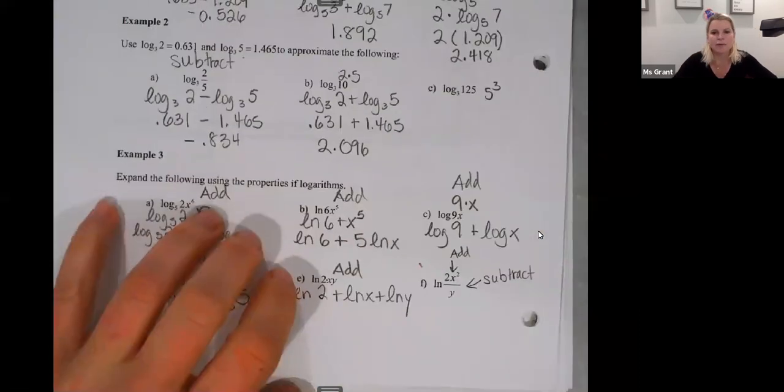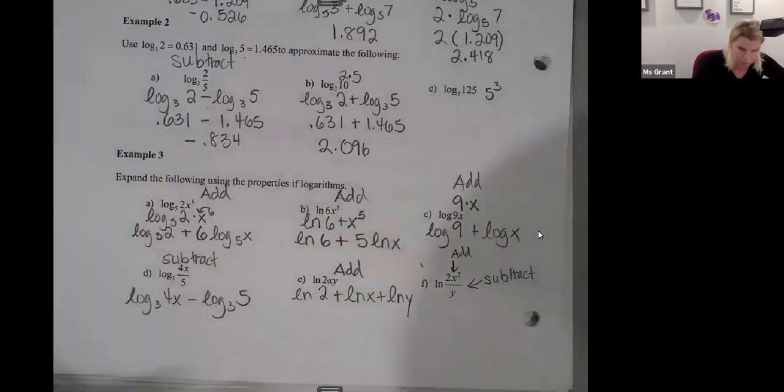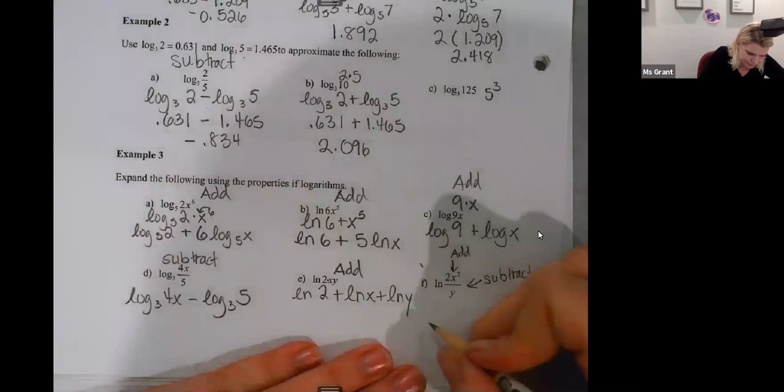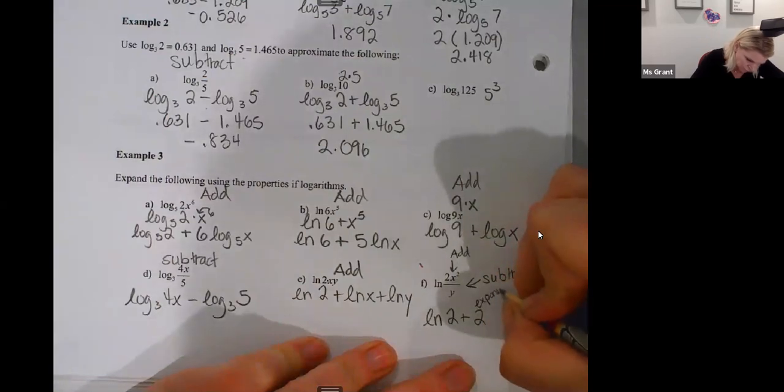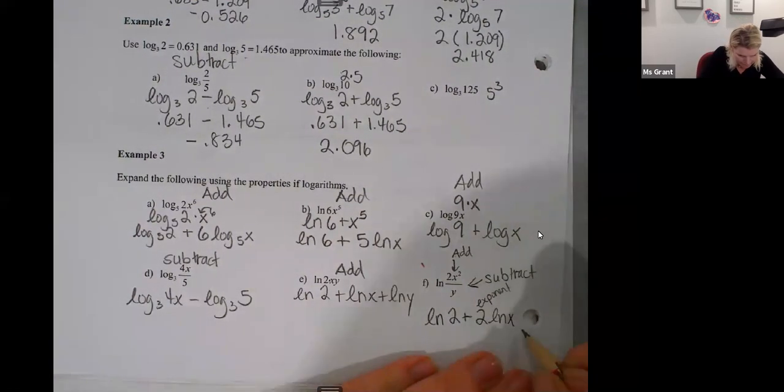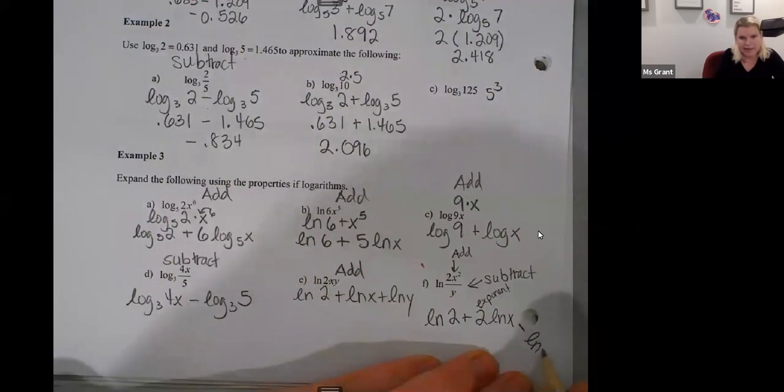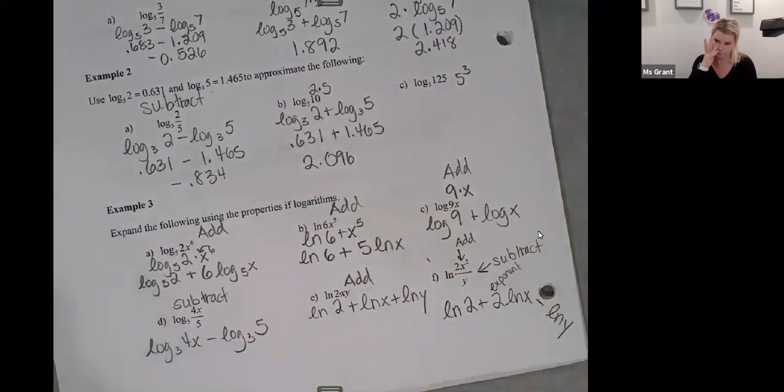Look at f. F's got lots going on. The exponent in the numerator is going to make it an addition with the two, and the x squared is different than the two. That's the numerator. Let me rewrite the numerator. Numerator first. Natural log of two plus the squared, this is the exponent, ln of x. Now I'm doing the division minus ln of y. Natural log of two plus two times the natural log of x minus the natural log of y.